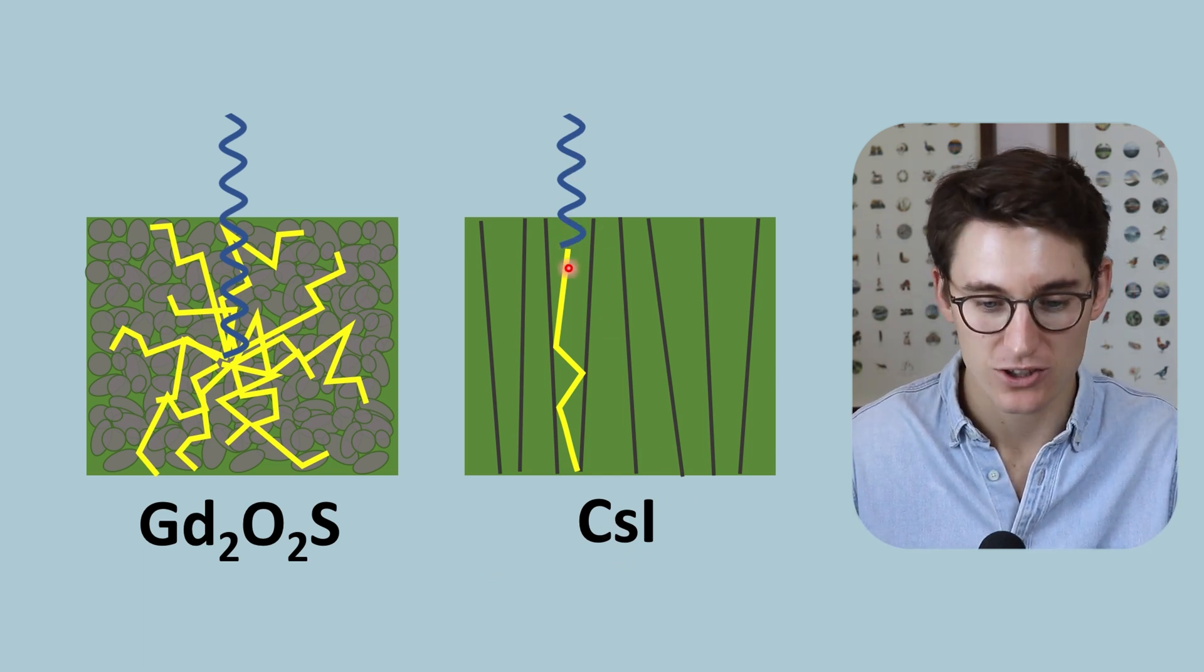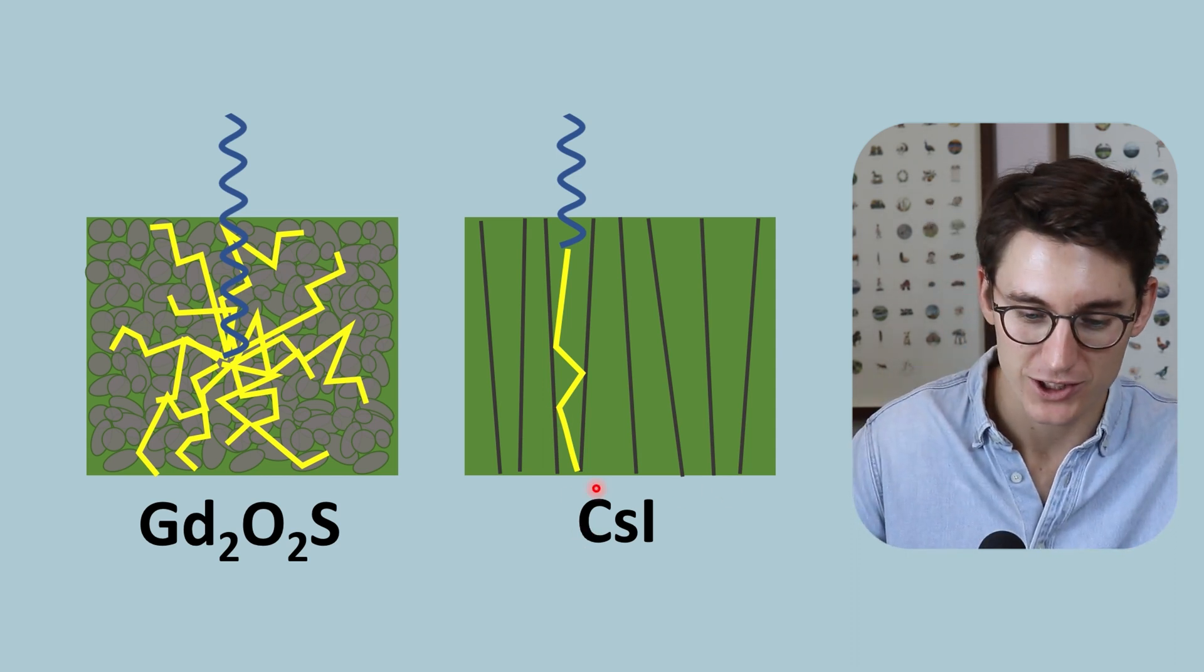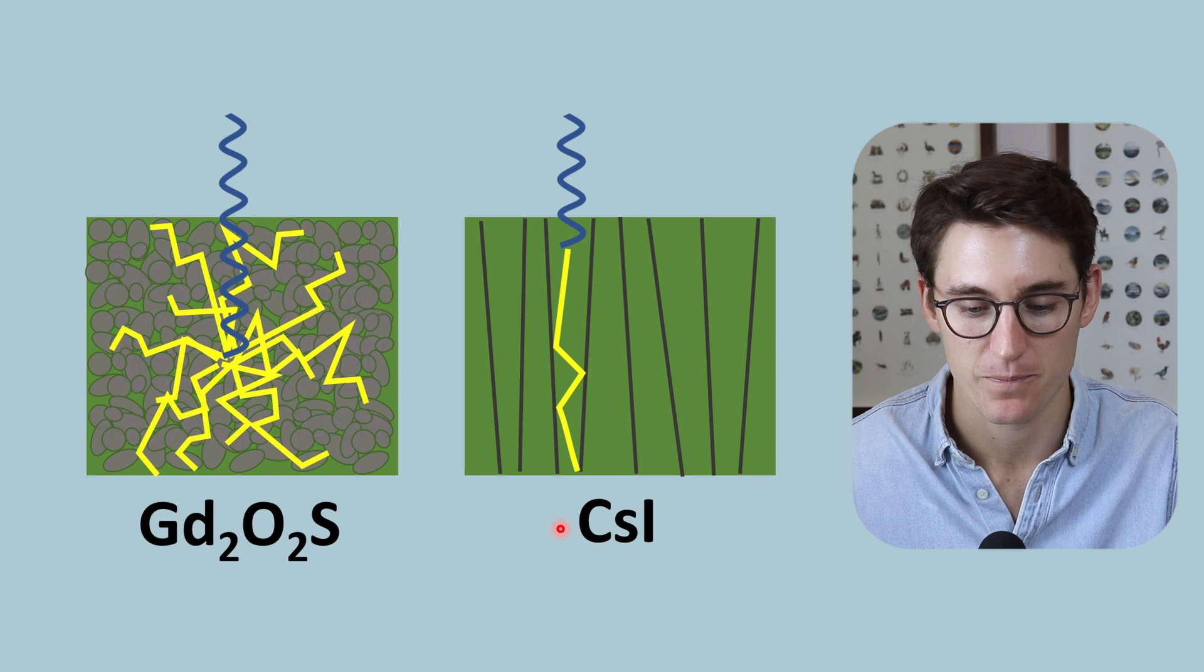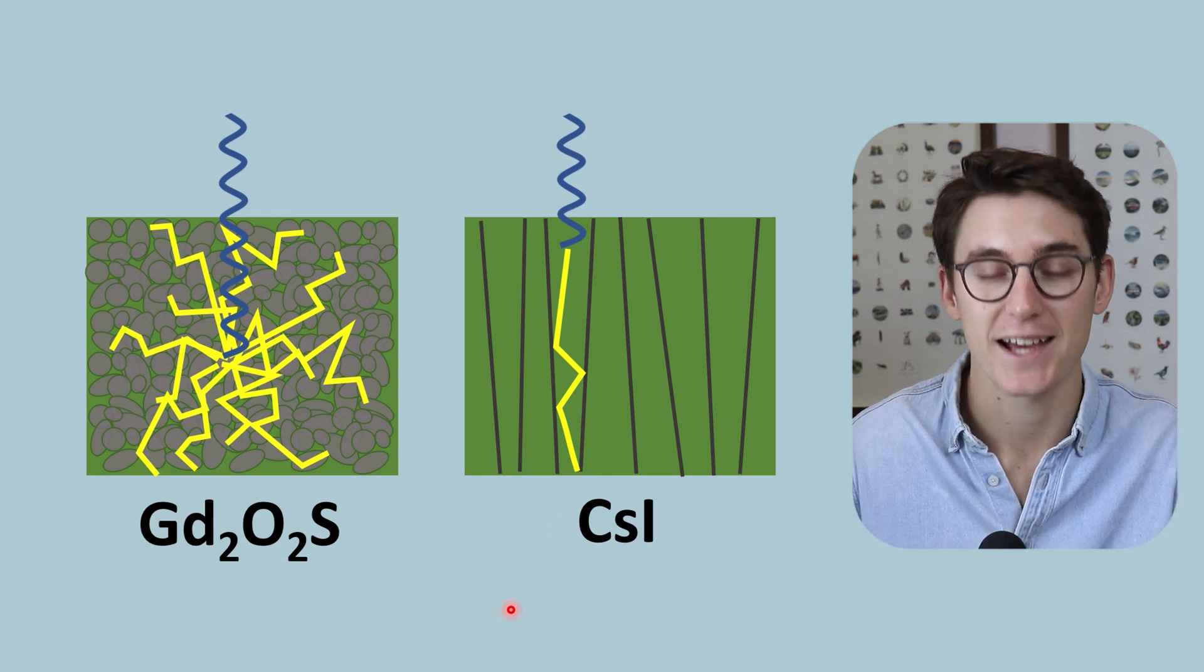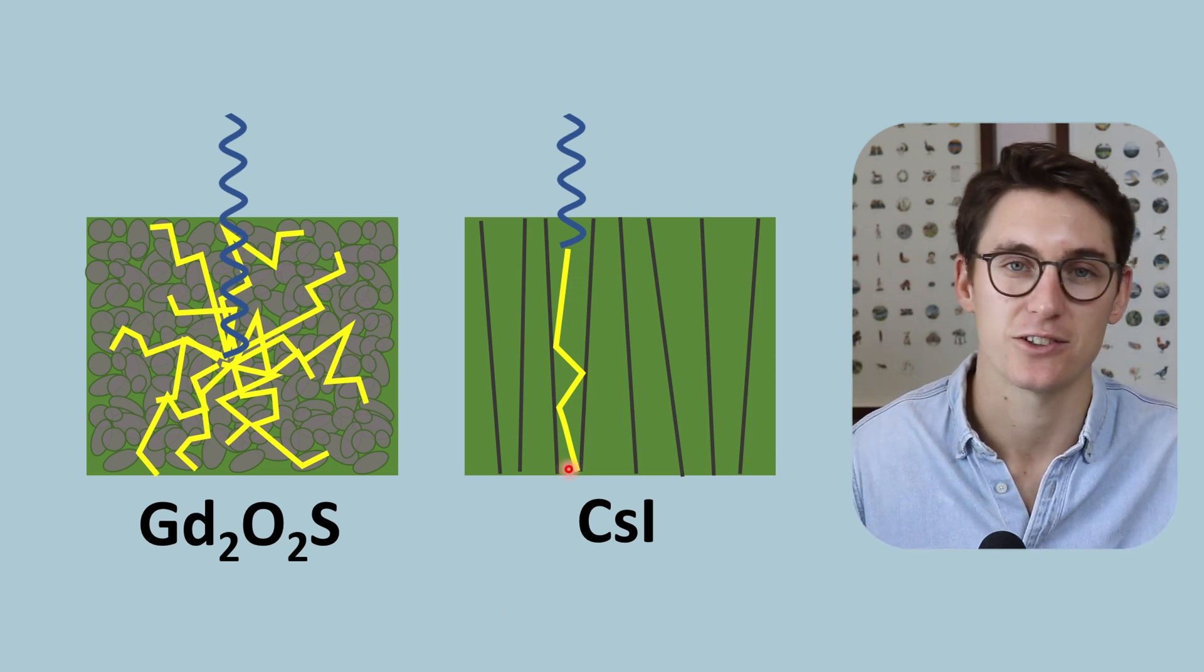A single x-ray photon is converted into light which is then funneled down onto a small area on our digital radiography detection system. So cesium iodide has improved spatial resolution but it creates a much less intense light signal.